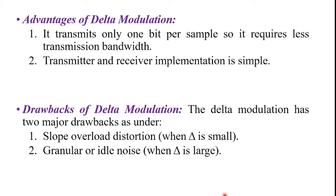These are the advantages of delta modulation over pulse code modulation. Moving on to the disadvantages or drawbacks of delta modulation — there are two major drawbacks. The first one is slope overload distortion, and the second drawback is granular noise, also called idle noise.